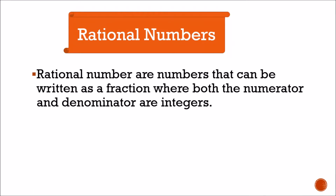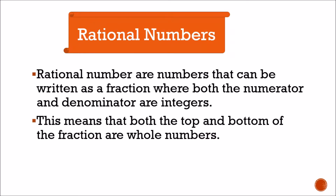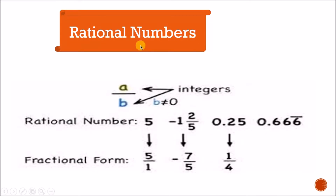Next is rational numbers. What is a rational number? Rational numbers are numbers that can be written as a fraction where both the numerator and denominator are integers. This means both the top and the bottom of the fraction are whole numbers. Examples: 25/100 and 23/7 are rational numbers. Rational numbers are written in the form a/b where both a and b are integers.